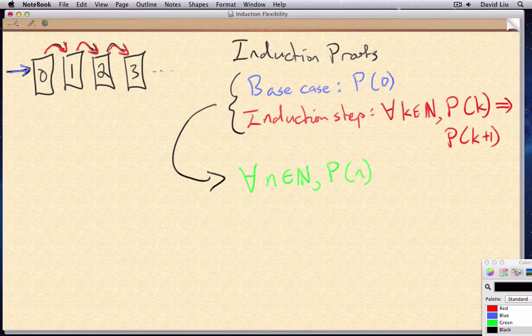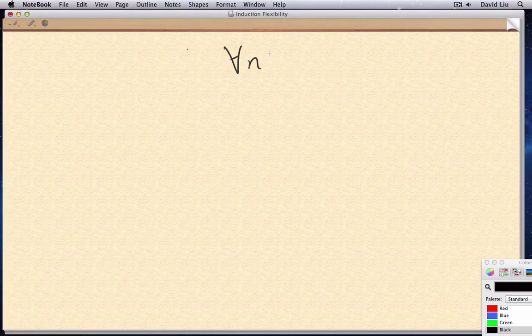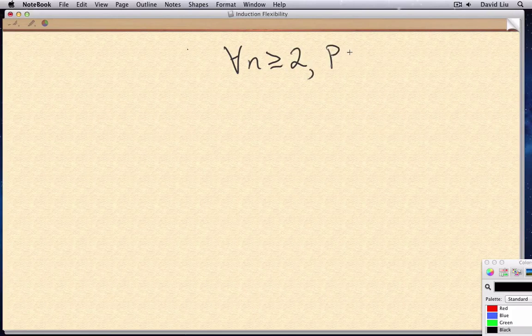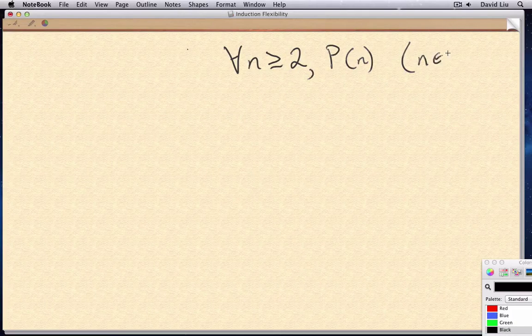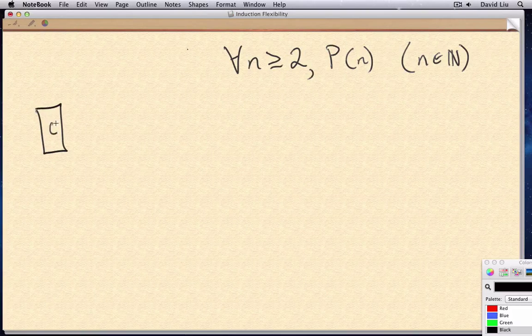For example, what if we wanted to prove a statement of the form, for all n greater than or equal to two, p of n, where here implicitly, n is some natural numbers still. So we're still talking about natural numbers, but only a subset of them. We're excluding zero and one.